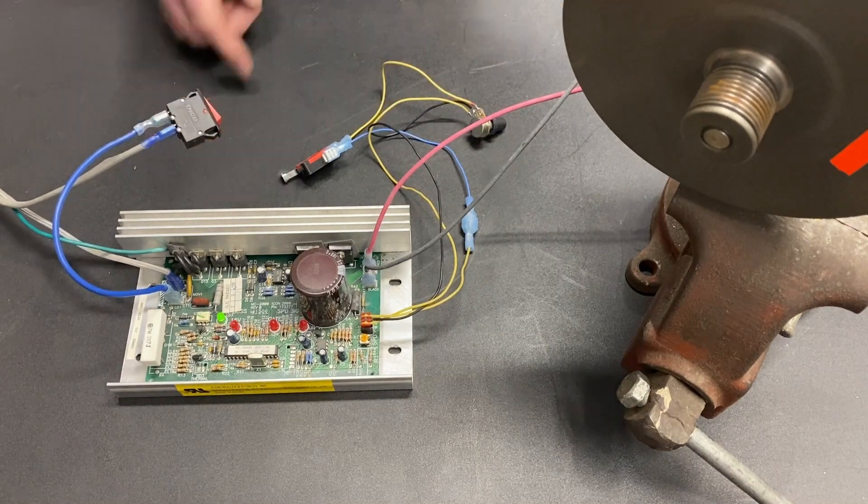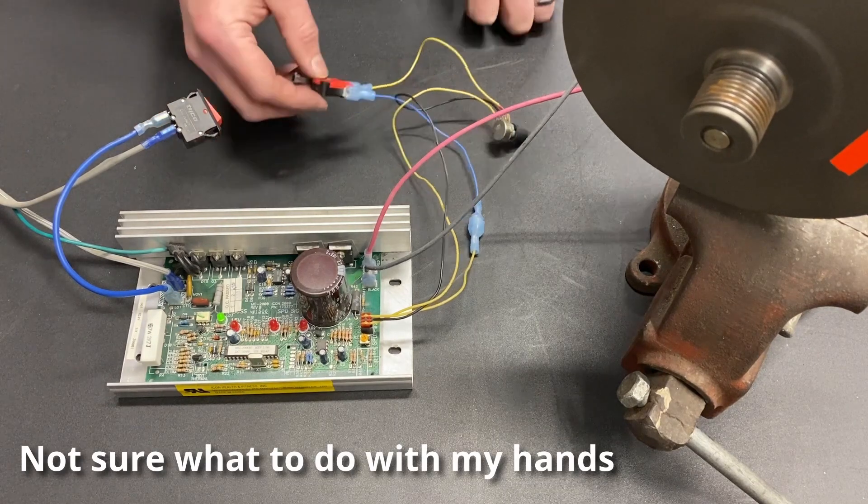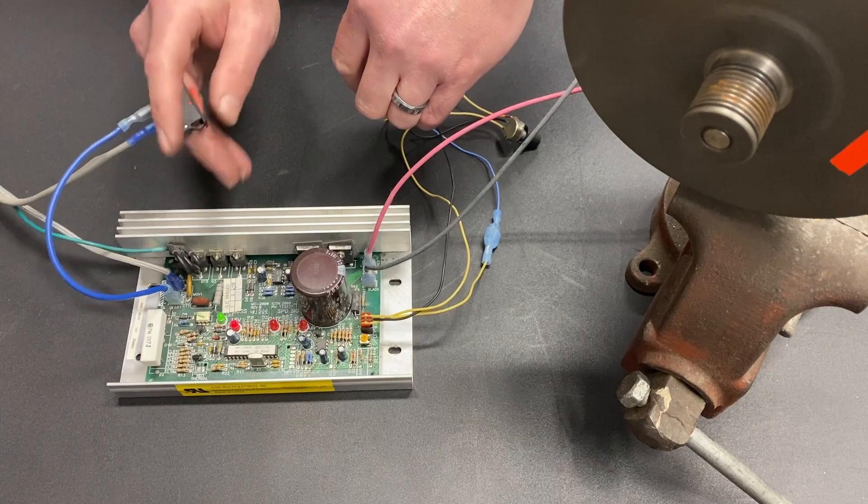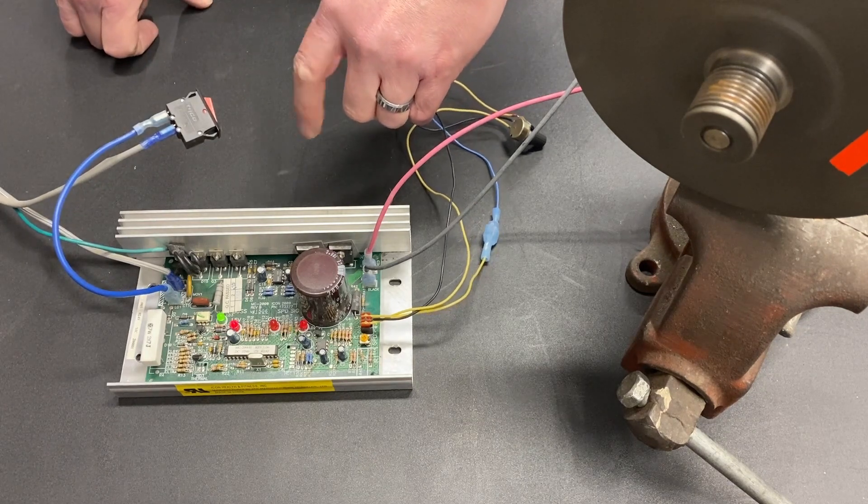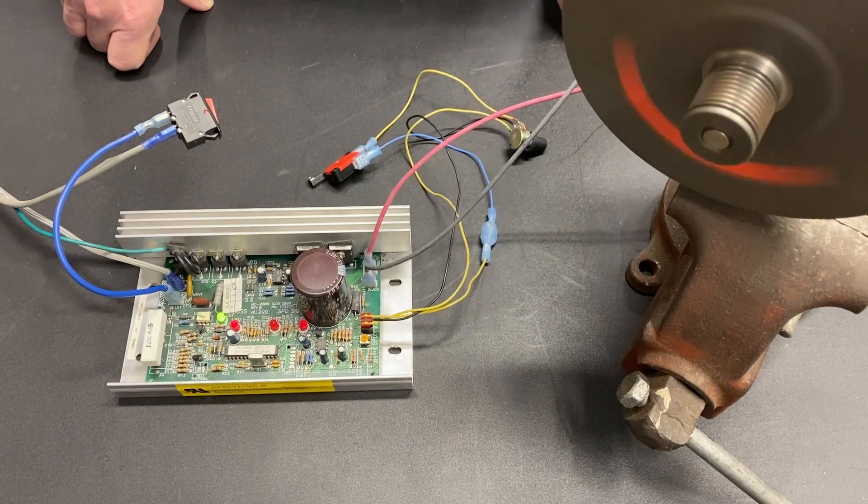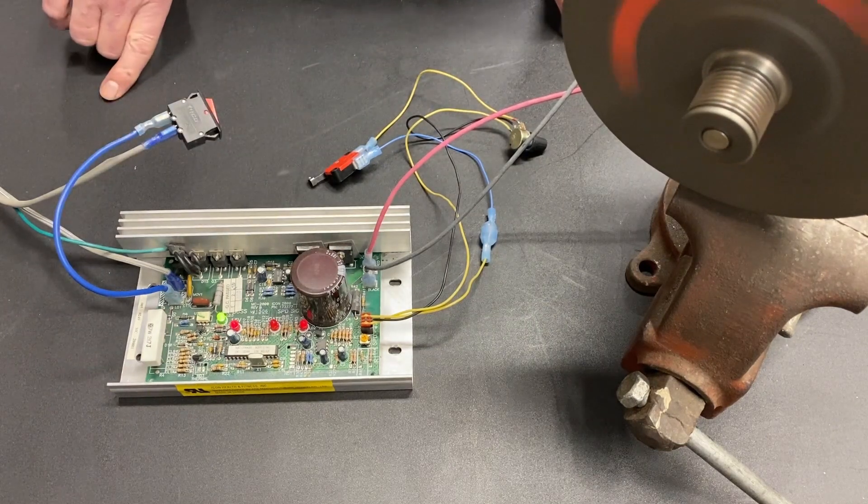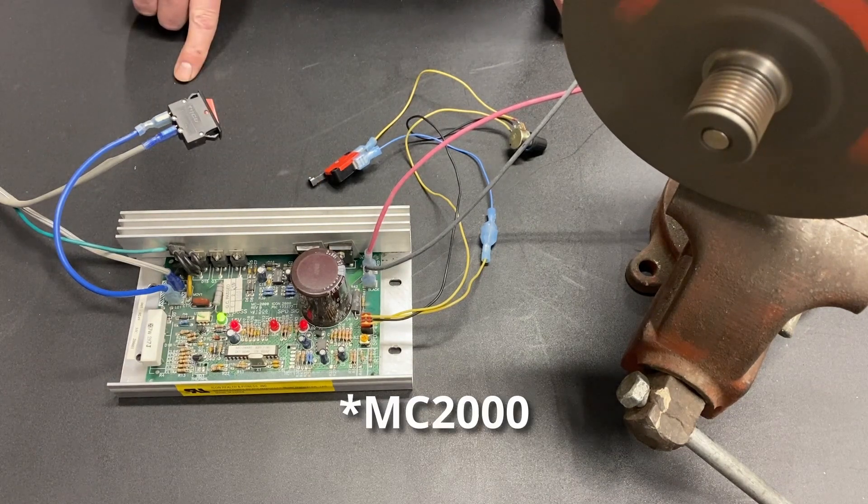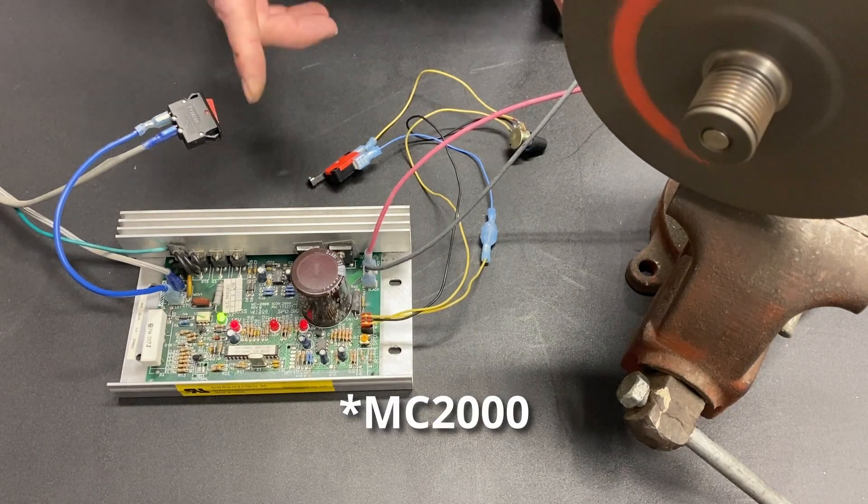So turn it off. Now, if we go to our momentary switch, we go ahead and break the connection. We turn the power on. We let the momentary switch go. We're making the connection. Now we are back up to that speed. It's a very simple solution in eliminating soft start on the MC2100 or the MC60.